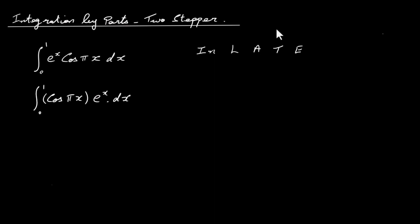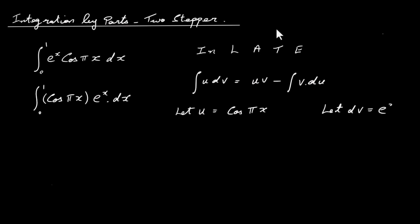To do integration by parts we use the formula: the integral of u dv equals u times v minus the integral of v du. We let u equal cos pi x and dv equal e to the power of x. Differentiating u: du/dx equals minus sine pi x, and by the chain rule we differentiate pi x to get pi, so du equals minus pi sine pi x dx.